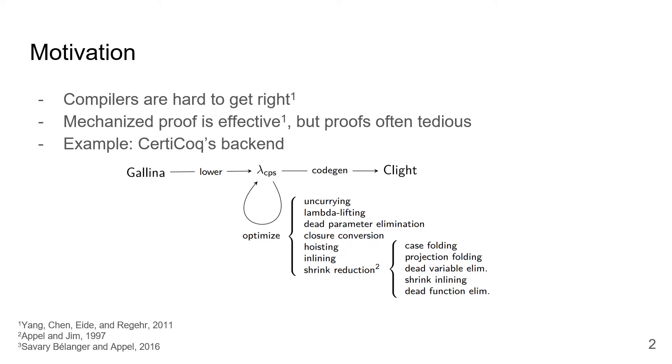We've been building a verified compiler called CertiCoq, which goes from Gallina, the core language of the Coq proof assistant, to a subset of C. CertiCoq's backend has a number of optimization passes, each of which must be proved correct, and these proofs can take up a lot of our time.